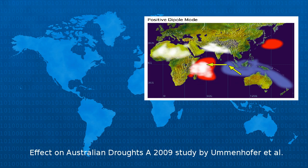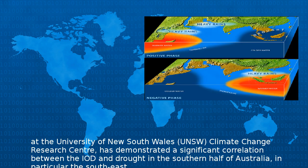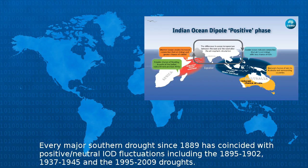A 2009 study by Ummenhofer et al. at the University of New South Wales (UNSW) Climate Change Research Centre has demonstrated a significant correlation between the IOD and drought in the southern half of Australia, in particular the southeast. Every major southern drought since 1889 has coincided with positive or neutral IOD fluctuations, including the 1895–1902, 1937–1945, and the 1995–2009 droughts.